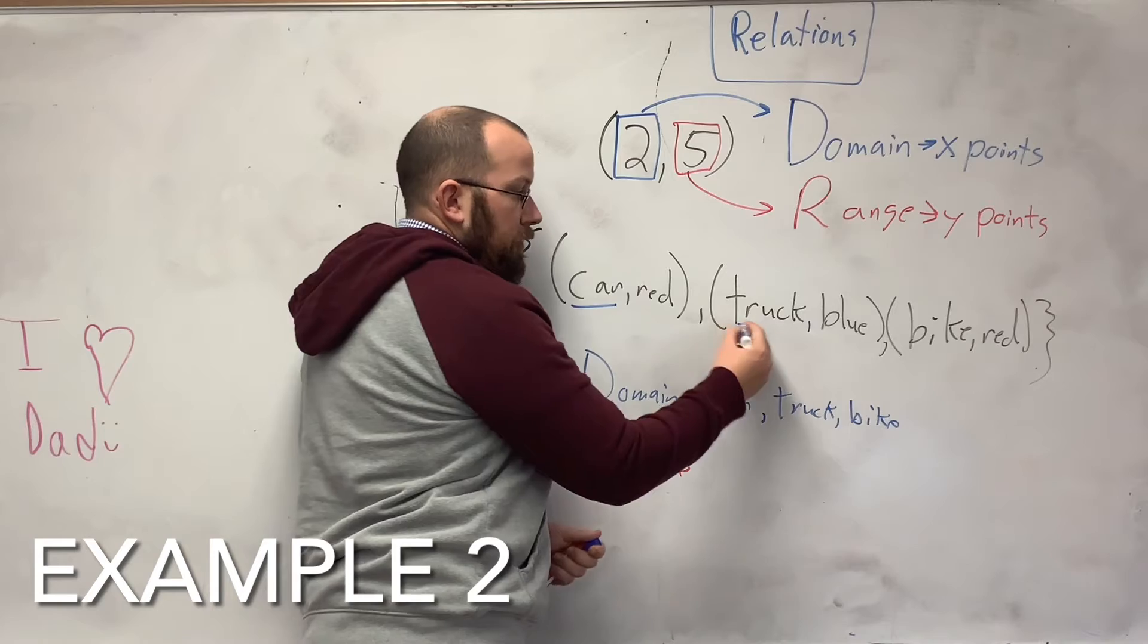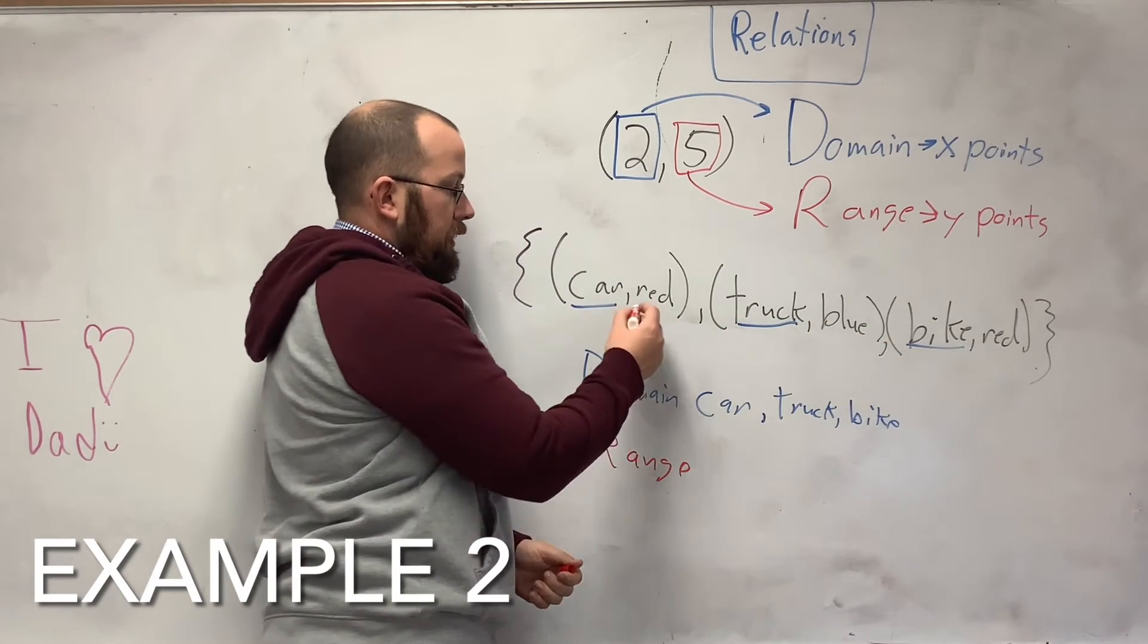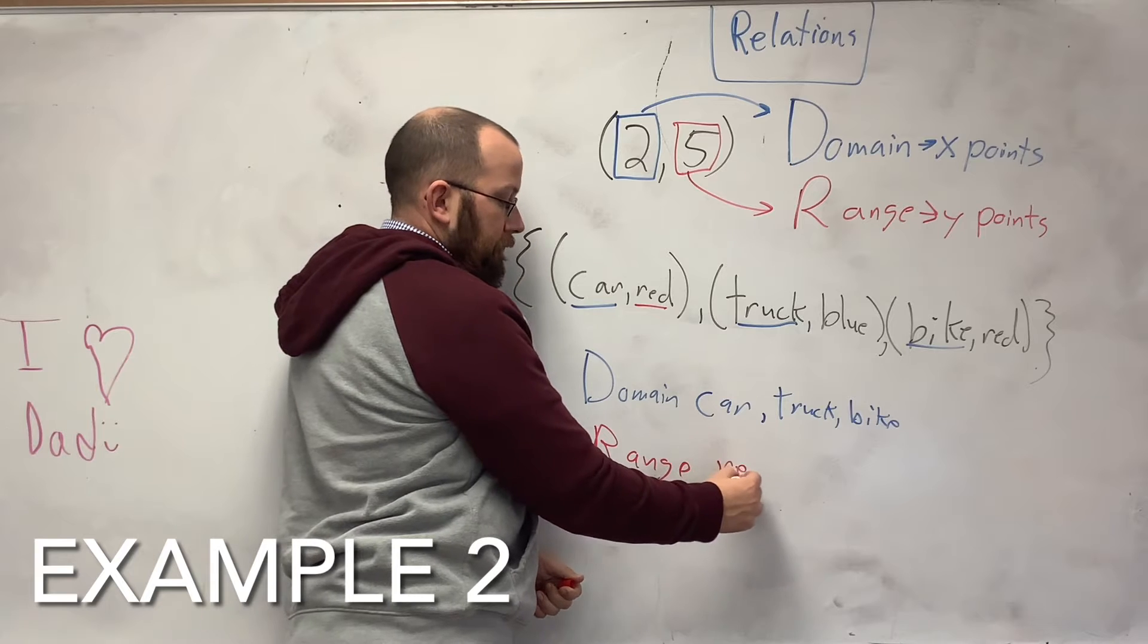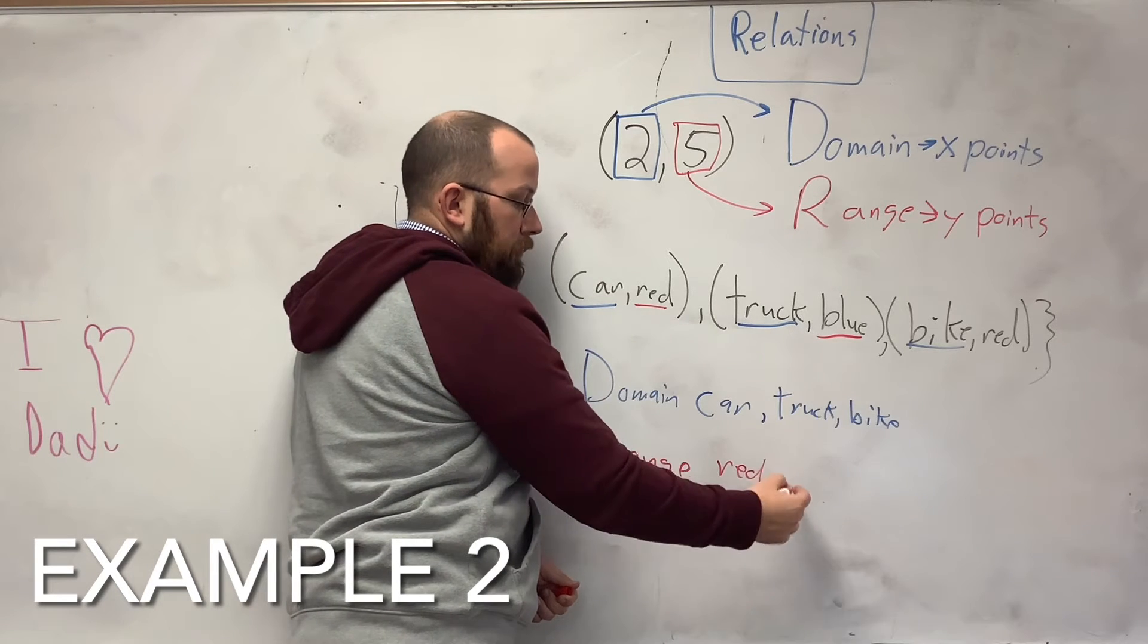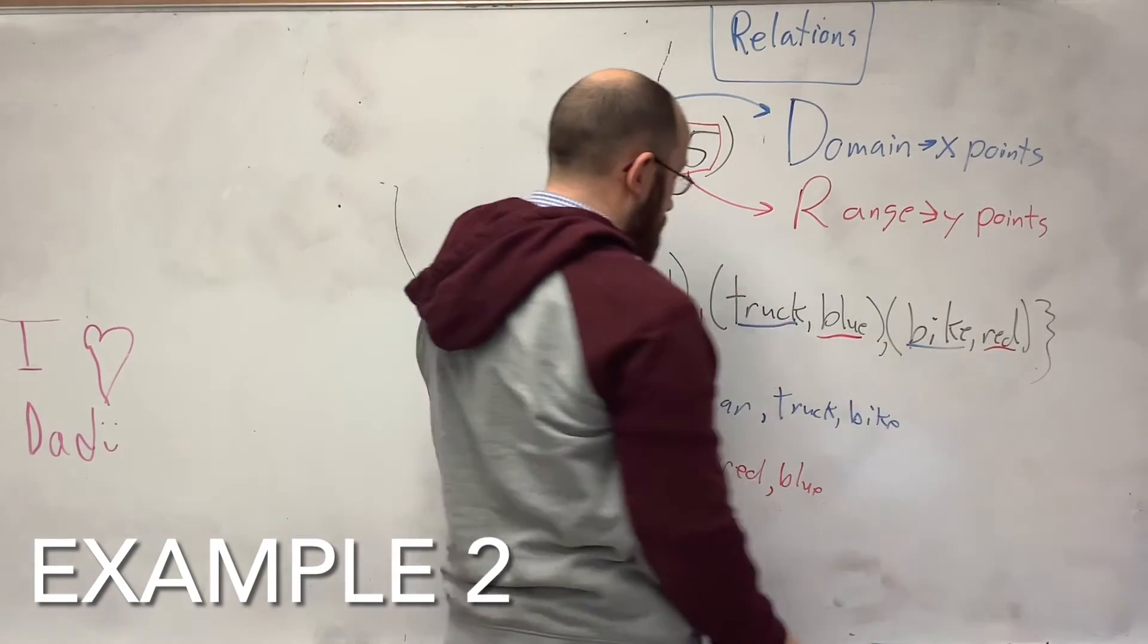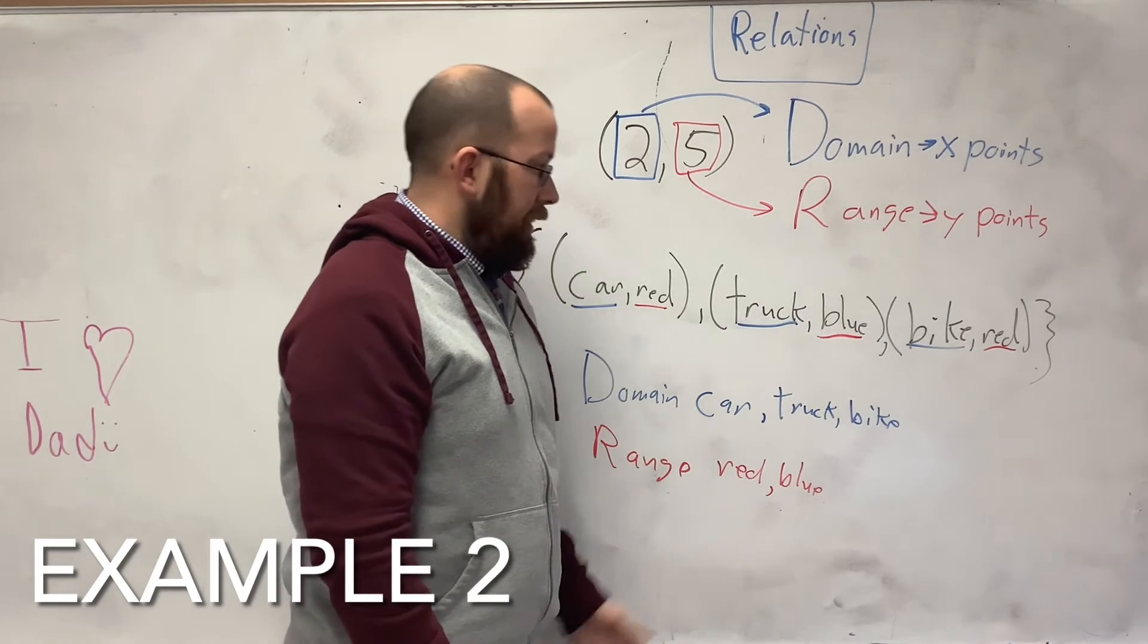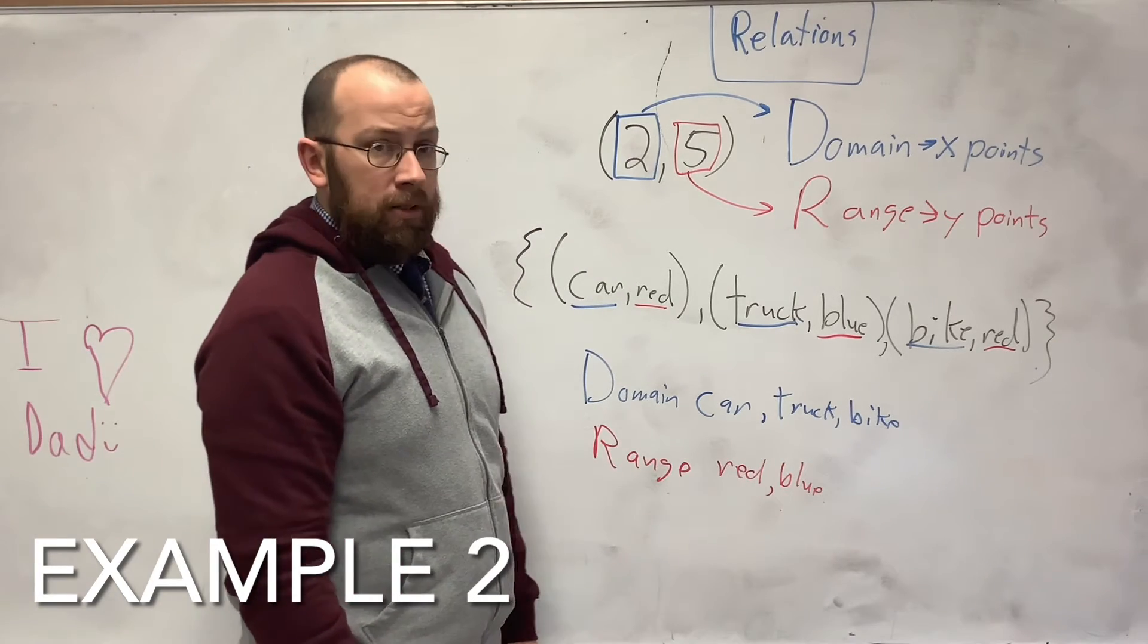And now, my range is just the second of the points inside. Red, blue, and now I have red again. But since I already have red in there, I do not have to write red again. And that is your domain and range of your relations.